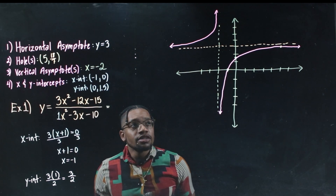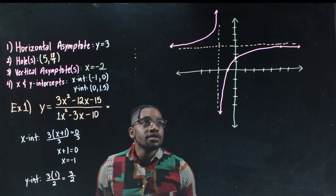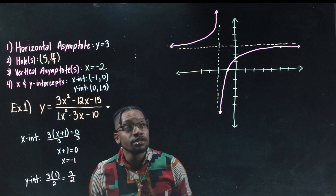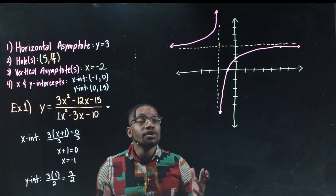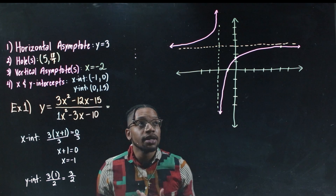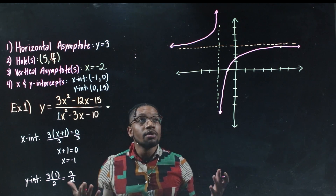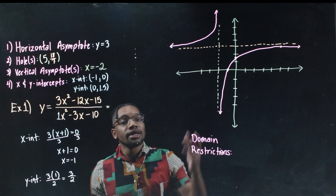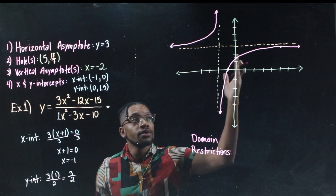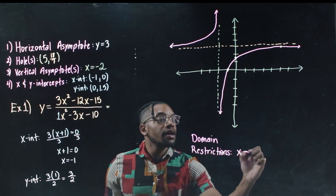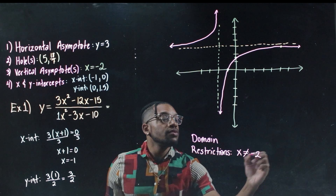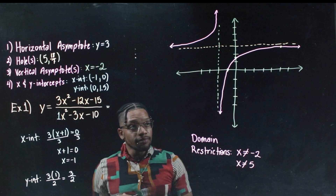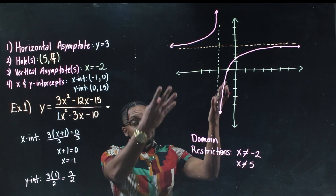The last thing is the domain of the function, which solidifies what it means to have vertical asymptotes and removable discontinuities. The domain is all real numbers except the values that cause a zero in the denominator. Looking at the vertical asymptote and the hole, x cannot equal negative 2 and x cannot equal 5.